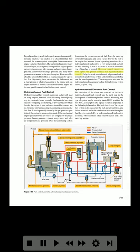Electronic controls can receive more inputs with greater accuracy than hydromechanical controls. Early electronic controls used a hydromechanical control with an electronic system added to fine-tune the metering of the fuel; this arrangement also used the hydromechanical system as a backup if the electronic system failed. The addition of the electronic control to the basic hydromechanical fuel control was the next step in development. Generally, this type of system used a remotely located EEC to adjust the fuel flow.